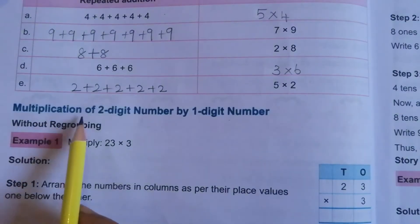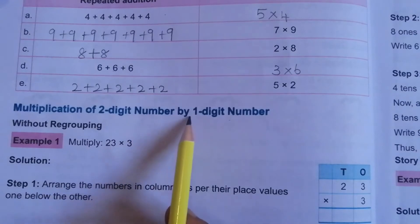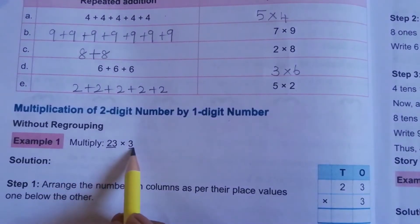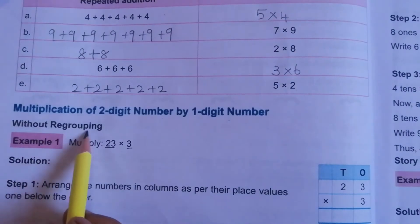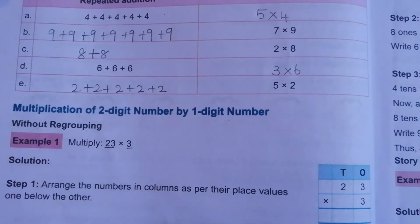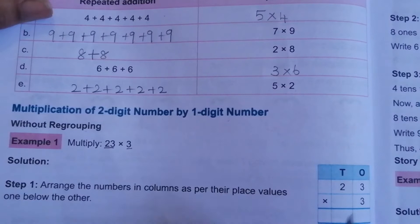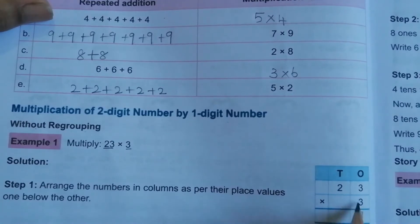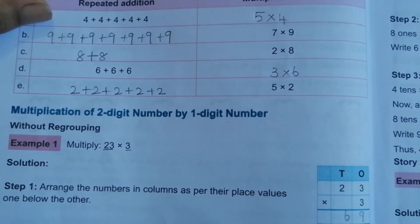The next topic is multiplication of a two-digit number by a one-digit number. First, without regrouping — that means without carryover. For example, 23 × 3: 3 threes are 9, and 3 twos are 6, giving 69. You have to memorize all the multiplication tables, then you can do multiplication problems easily.